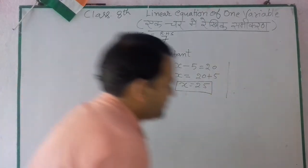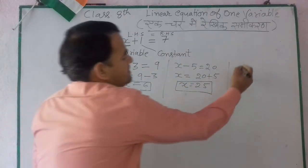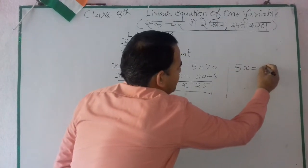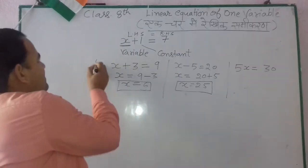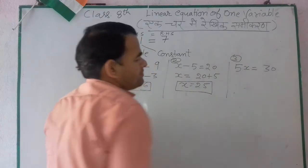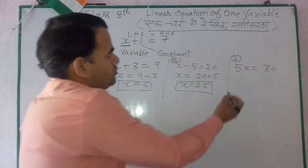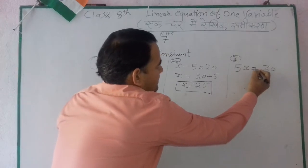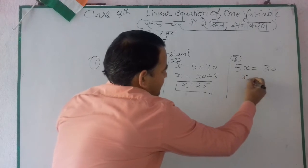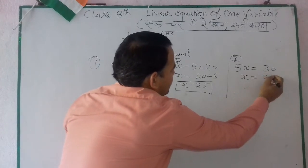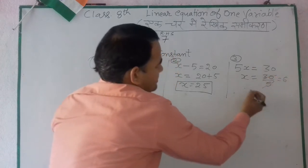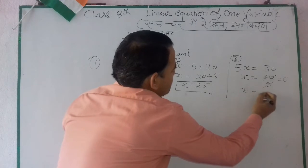Now suppose 5x is equal to 30. This is the third type. If there is multiplication on one side, we divide the right side by 5. So 30 divided by 5 equals 6. Therefore x is equal to 6.